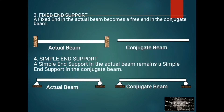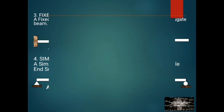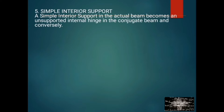Looking at the actual beam and conjugate beam — Number 5: a simple interior support in the actual beam becomes an unsupported internal hinge in the conjugate beam.